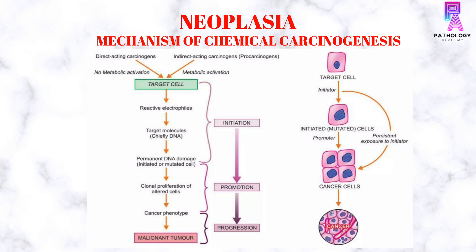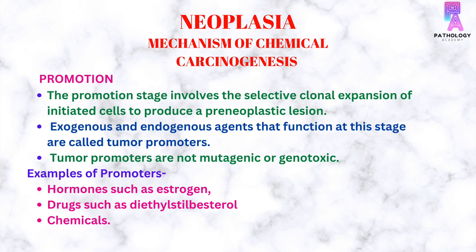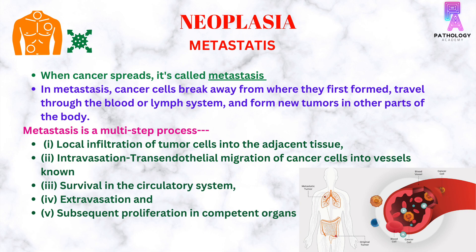In the step of promotion, there is clonal proliferation of the altered cells, and in the progression stage, there is formation of a malignant tumor. The promotion stage involves the selective clonal expansion of initiated cells to produce a pre-neoplastic lesion. Exogenous and endogenous agents that function at this stage are called tumor promoters. These tumor promoters are not mutagenic or genotoxic. Examples of promoters are hormones like estrogens, drugs like diethylstilbestrol, and certain chemicals.